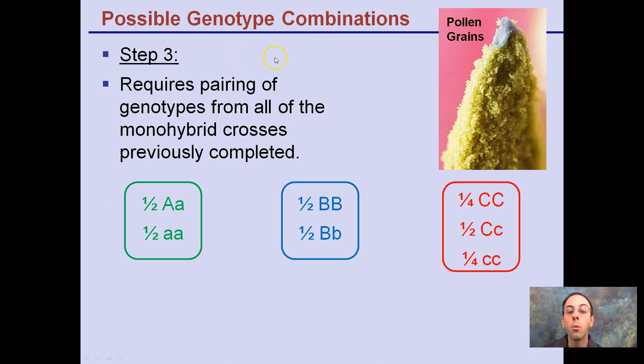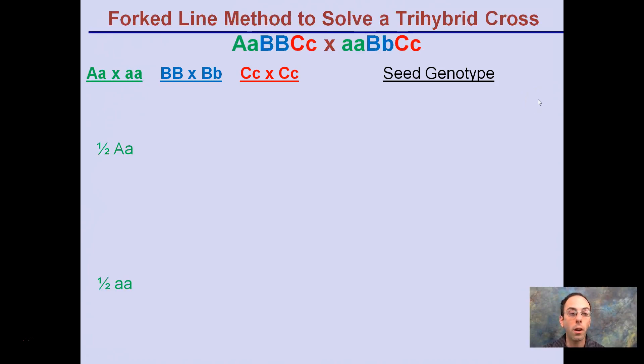The possible genotype combinations now requires the pairing of genotypes from all the monohybrid crosses previously completed. So I just took those simple boxes here, and we're going to progress those to the next step. These are the possible gametes that could be in the egg, or in this case the pollen grain, because we're looking at crossing two plants together.